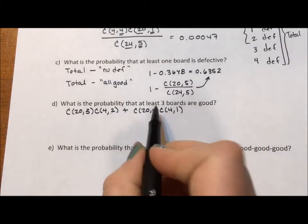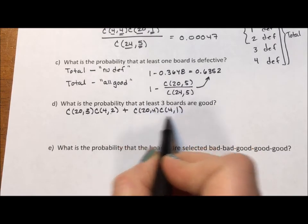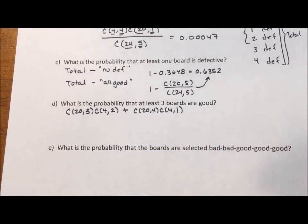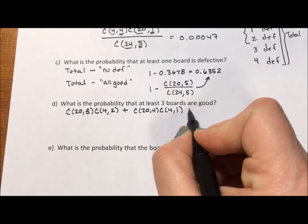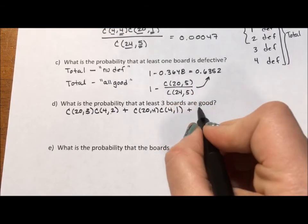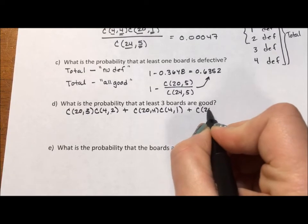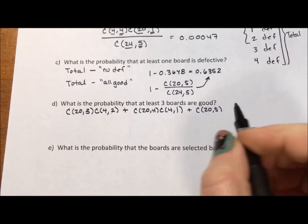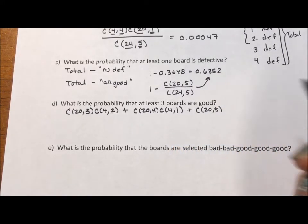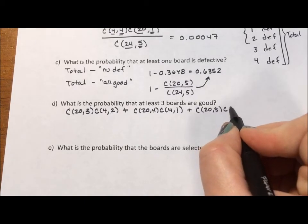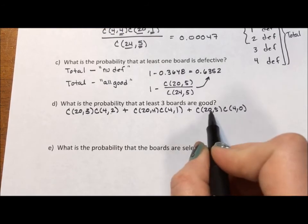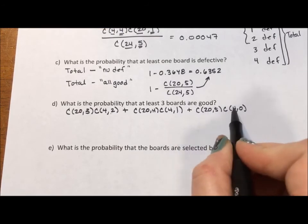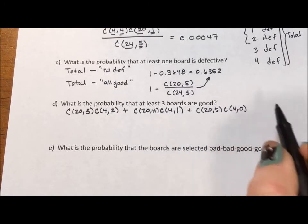Once again, 3 plus 2 is 5, 4 plus 1 is 5. We multiply out for each category. Last, we're going to do the combination that they're all good. Now, up at the top, what I did is I said the combination of the 20 boards taken 5 at a time. If I wanted to kind of have that full symmetry like I did in Part B, I could have multiplied in the combination of the 4 defective boards taken 0 at a time.